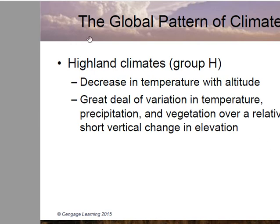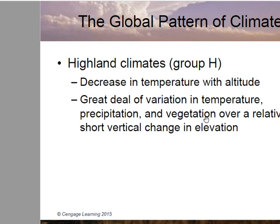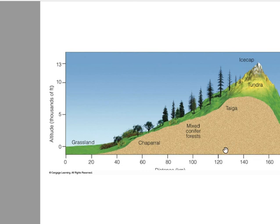There is also an H group for highland climates, because variation in altitude leads to a difference in climate. Since temperatures decrease with altitude, you get the same types of vegetation at different altitudes as you would at different latitudes, along with variation in precipitation and vegetation over a short vertical change in elevation.